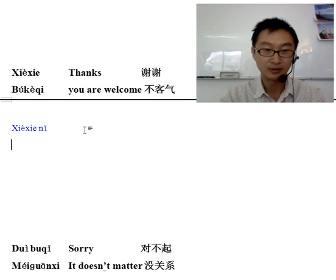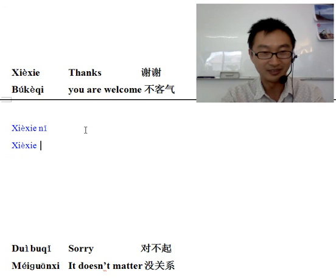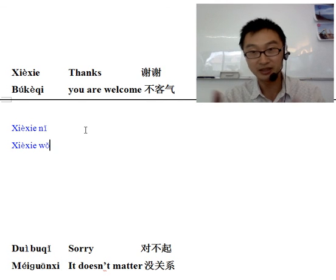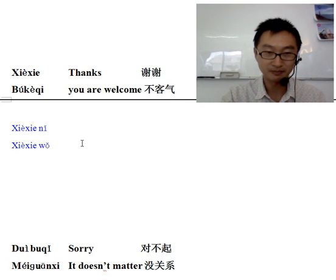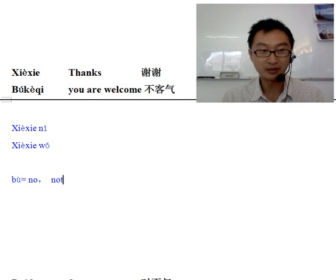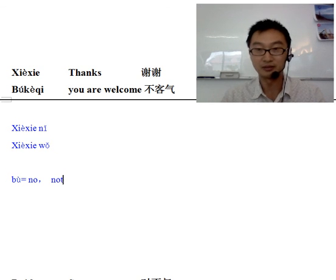Xie xie ni — thank you. You will thank me: Xie xie wo, Xie xie ni, or just say Xie xie — thanks. When someone says Xie xie ni, what do you reply? You will say you're welcome, right? In Chinese they say Bu ke qi. Bu is a very important word in Chinese — it means no or not. If you want to deny something, you say Bu.